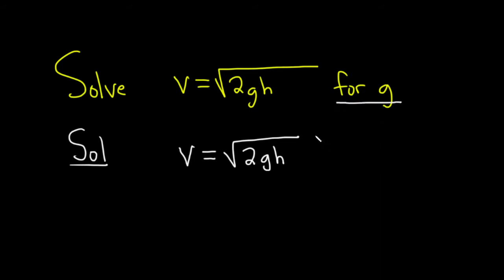So because little g is inside the square root, we need to get rid of the square root. To do that, we can simply square both sides.